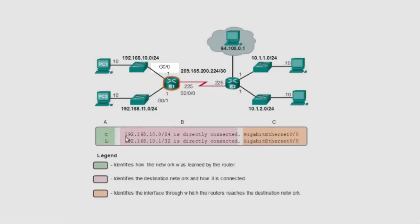So if I want to send to this destination network, it is directly connected and I have to exit the packet through GigabitEthernet0/0. If I want to send to destination network 192.168.11.0, any host that exists on this network will be sent to exit interface G0/1, which is GigabitEthernet0/1.